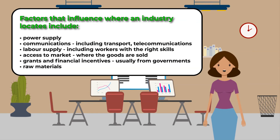Factors that influence where an industry locates include: power supply; communications, including transport and telecommunications; labor supply, including workers with the right skills; access to market, where the goods are sold; grants and financial incentives, usually from governments; and raw materials.